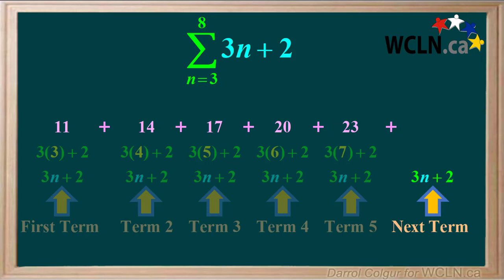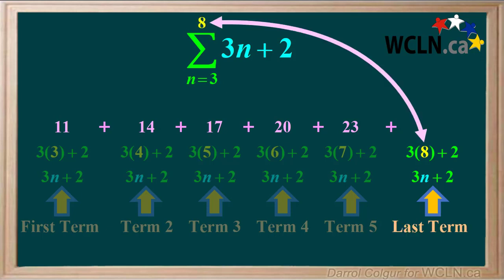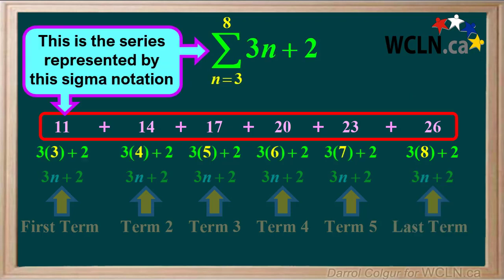For the next term, we'll continue to use 3n plus 2. The value of n for this term is 8, the number that follows 7. And because 8 is written on top of sigma, it means this is the last term in this series. Its value is 24 plus 2, or 26. So this is the series represented by this sigma notation, where the function is 3n plus 2 and the value of n goes from 3 to 8.